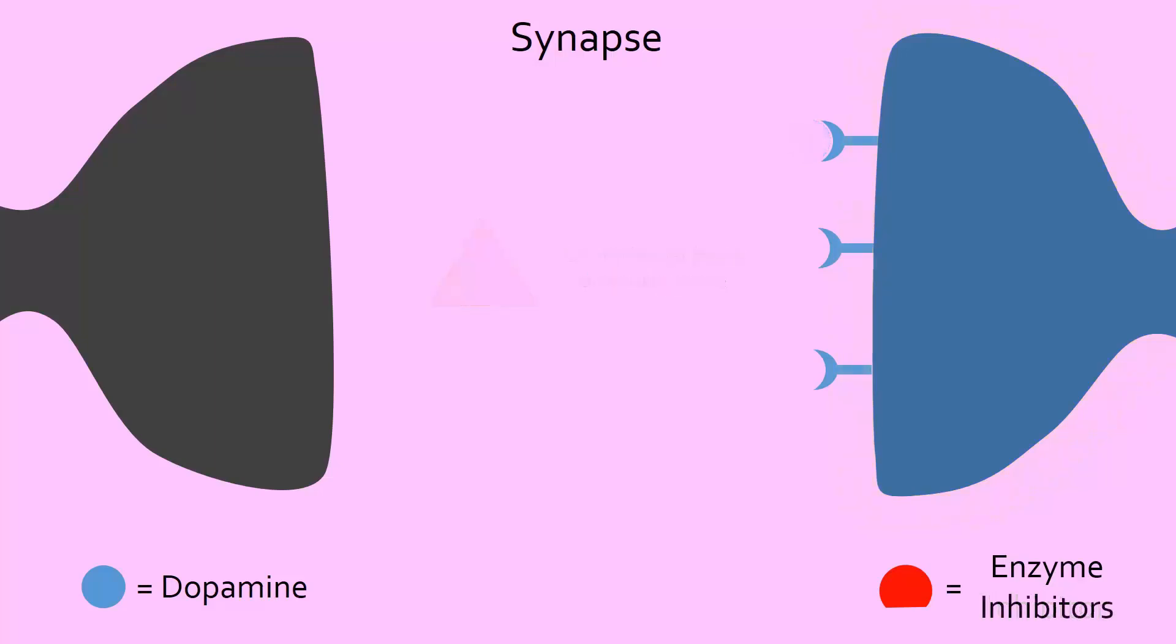Other drugs can directly increase dopamine levels, such as levodopa, which can be converted into dopamine in the body, and dopamine agonists, which are similar in structure to dopamine and can bind to dopamine receptors. All of these drugs are effective at first, but eventually stop working, or lead to many side effects.